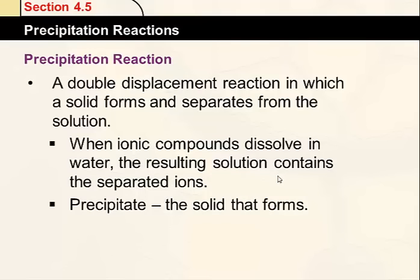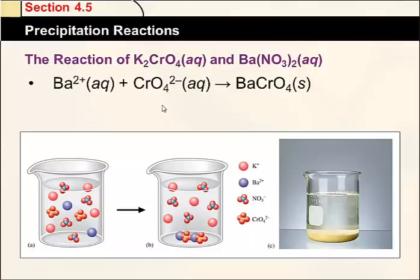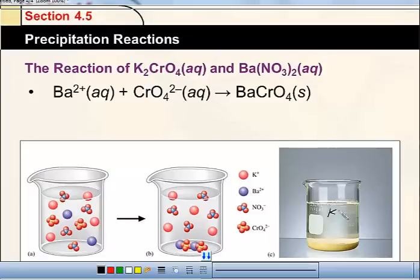The precipitate is a solid that forms and sits at the bottom. Here's an example of a precipitation reaction in which potassium chromate gets together with barium nitrate. They're both aqueous solutions, which means all of these ions dissolve in water. When added together, we have some ions that do not dissolve. The barium and chromate ions find each other, do not dissolve in water, stick together, and form a solid at the bottom of the beaker. The spectator ions would be the potassium and nitrate ions — those do not react at all, and they remain up in the solution.